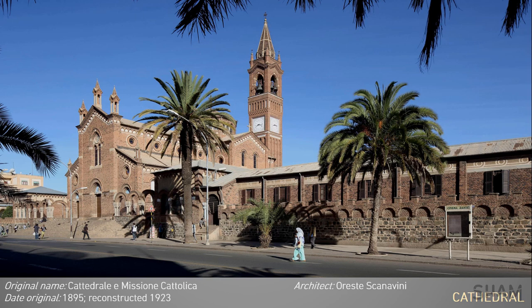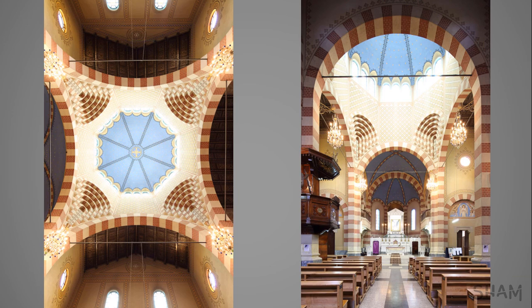When we come to the heart of Asmara, we can experience this beautiful cathedral. Its original name was Cattedrale e Museone Cattolica. Back in 1895 the cathedral was a small church, but was constructed in 1923 by architect Orestes Cannavini and took its current shape. You can see in these pictures the commanding skills of the architects, and the level of detail here is second to none.